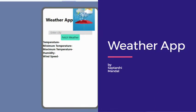Hello friends, welcome to my YouTube channel. Today I am going to show you an app in which you can see the temperature, minimum and maximum temperature, humidity and wind speed of a particular place. I am entering Delhi here.